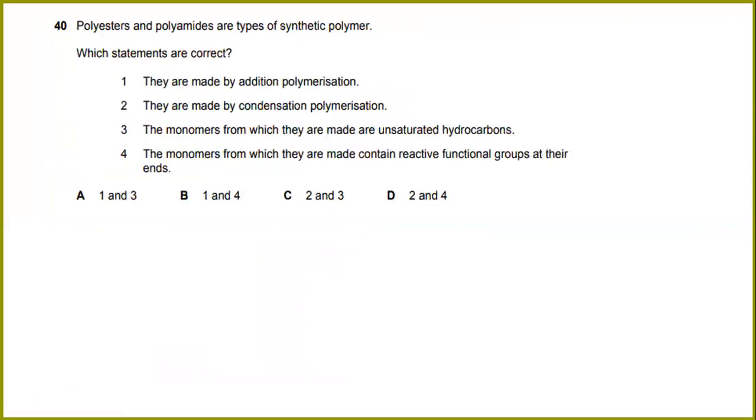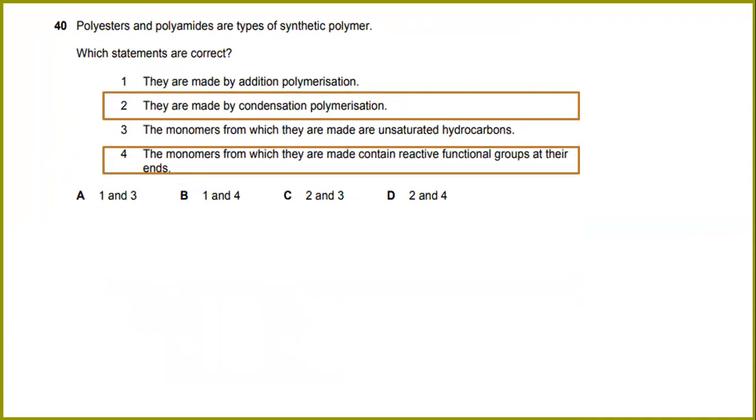Polyesters and polyamides are types of synthetic polymers. Which statements are correct? They are made by condensation polymerization, and the monomers from which they are made contain reactive functional groups at the ends. The answer will be 2 and 4.